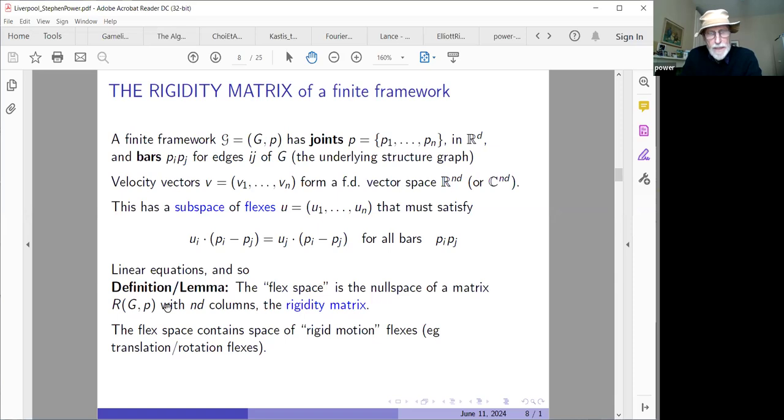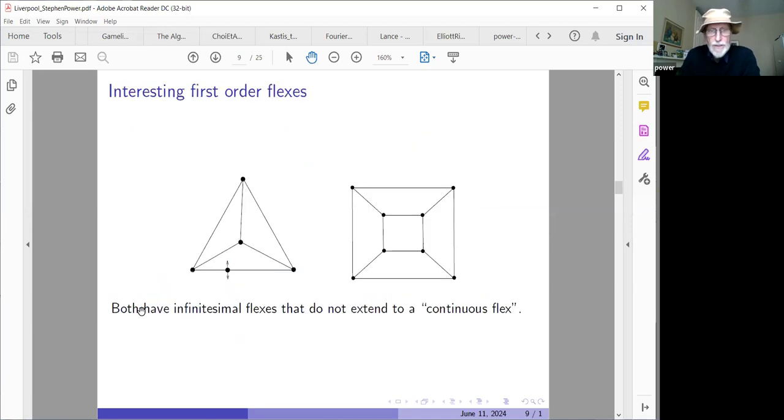And if we can find a velocity vector u1 up to un that satisfies these equations, then we have a first order flex. So with this set of linear equations, as usual, there's a matrix of coefficients. That's called the rigidity matrix. And that's really the key structure that I'll be talking about later, which is somewhat elaborated to take into account the crystal data. So here for my finite bar joint framework in two dimensions or three dimensions, this rigidity matrix will have nd columns, n for the joints, d for the dimension, and that will correspond to the dimension of the domain space of this matrix.